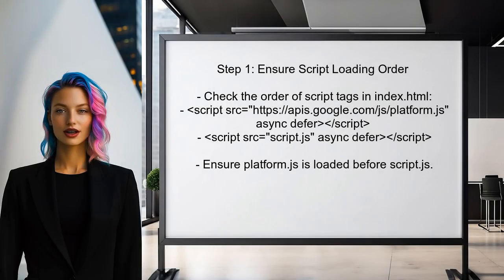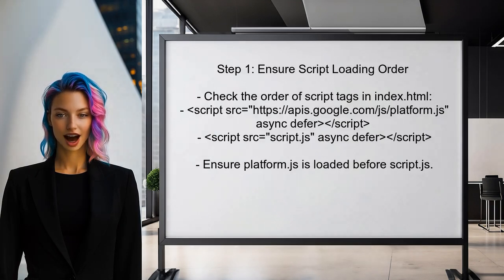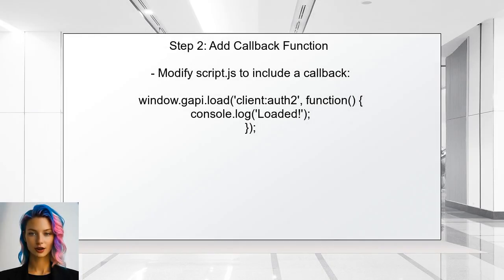To eliminate the error, first ensure that the Google API script is loaded correctly before calling the gapi.load function. This can be done by checking the order of the script tags in the HTML. Next, add a callback function to ensure that the gapi object is available before trying to load the Auth2 module. This can be done by using the gapi.load function inside the callback of the Platform.js script.